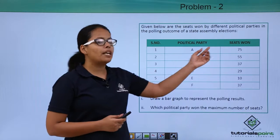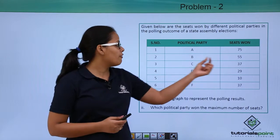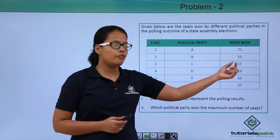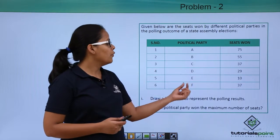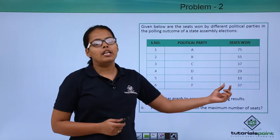For political party A, seats won is 75. For political party B, it is 55. For C, it is 37. For D, it is 29. For E, it is 10. And for F, it is 37.